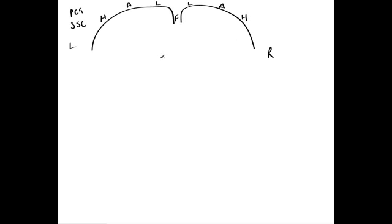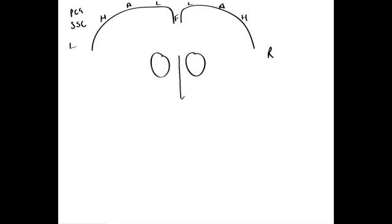We also need to draw the important relay nuclei — the two thalami. Here we have one, and here we have one. Remember, in life, these are separated via the third ventricle.